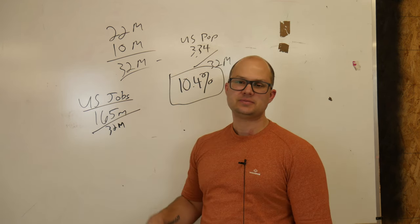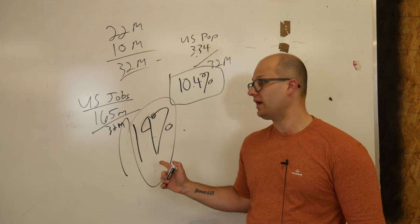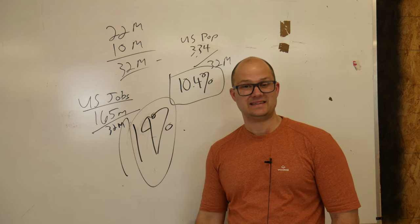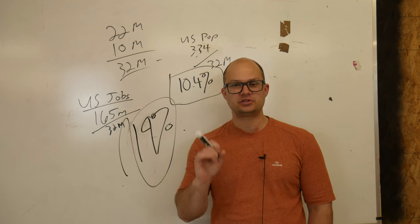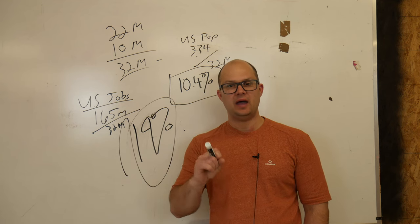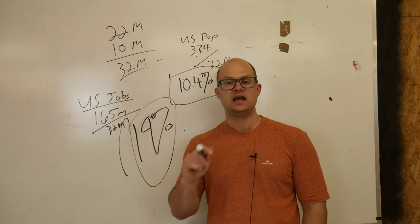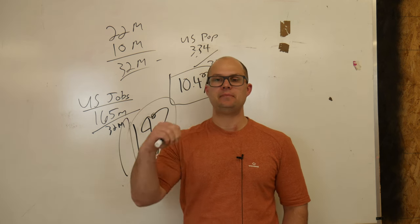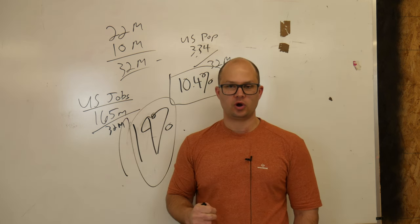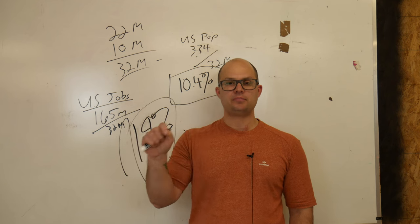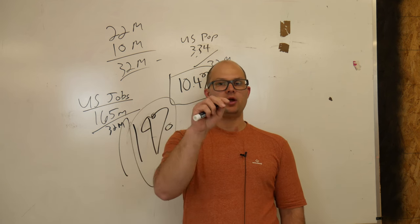So when you do this math, if you're unable to read my beautiful handwriting, that says 19%. 19% of the people who have a job have a job paid for with taxes. That's one in five. That means if you put 10 people in the room, two of them work for the government, and the other eight people fund their paychecks.